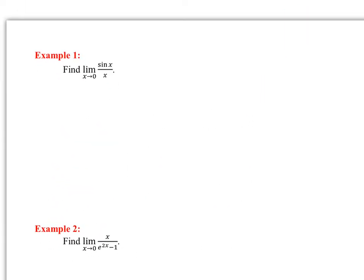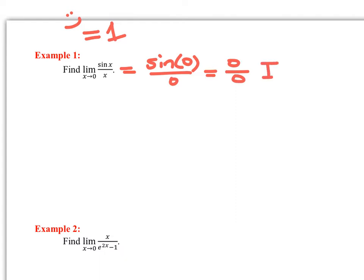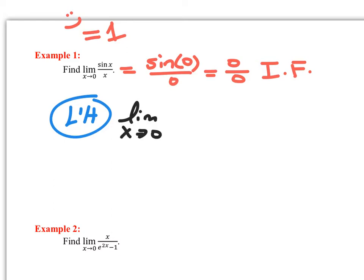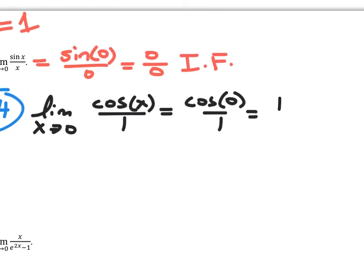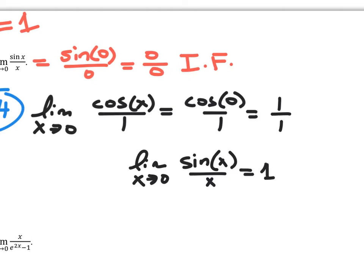We know this limit is a special limit that should equal one. If I do a direct substitution, sine of zero over zero is an indeterminate form, so I'll use L'Hopital's Rule. Taking the derivative of the numerator and denominator: the derivative of sine is cosine, and the derivative of x is one. Direct substitution gives cosine of zero over one, which equals one over one. Therefore, the limit as x goes to zero of sin(x)/x equals one.